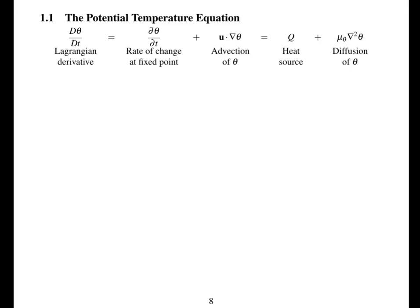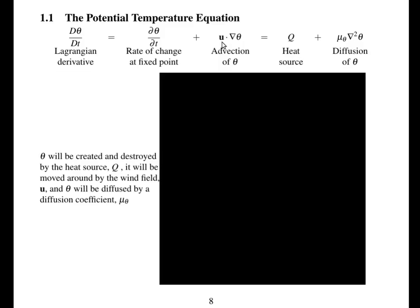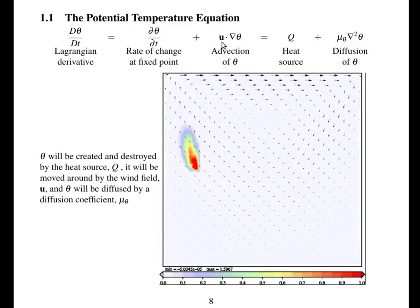So we're going to start with the potential temperature equation, which is an advection equation, the same as many other advection equations. So this Lagrangian derivative, capital D theta by dt, which is equal to rate of change of theta at a fixed point, then advection of theta, which is the wind velocity U in the same direction of gradients of theta.